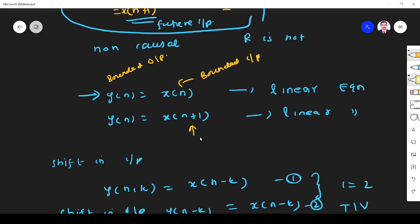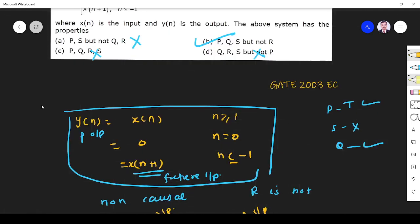Here you see x(n+1). If it is bounded means if you give some finite input, what do you get? The output is bounded only, it is finite output. So it is stable. The system is stable.